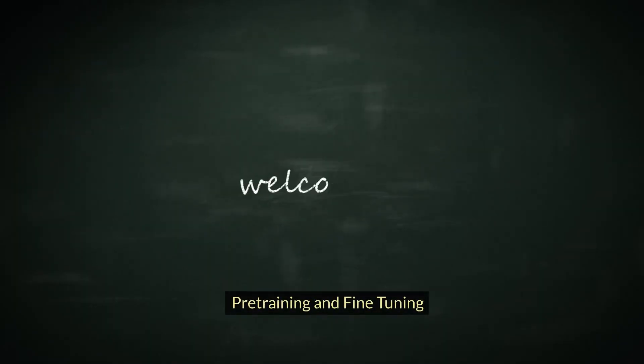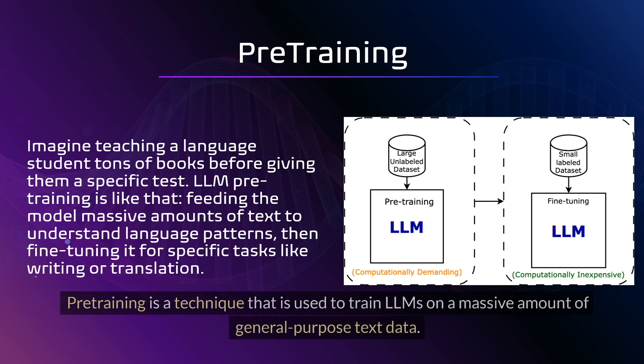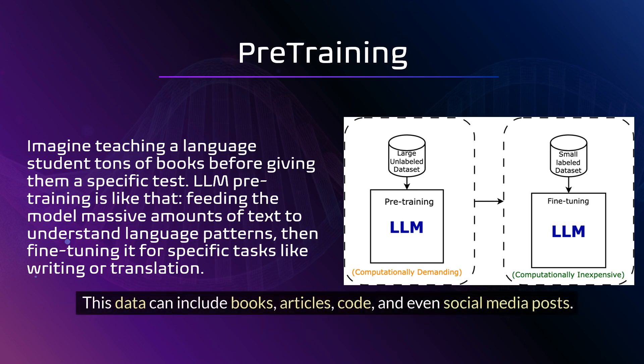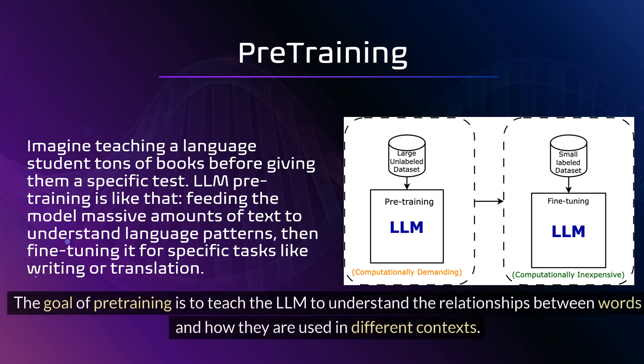Pre-training is a technique that is used to train LLMs on a massive amount of general-purpose text data. This data can include books, articles, code, and even social media posts. The goal of pre-training is to teach the LLM to understand the relationships between words and how they are used in different contexts.